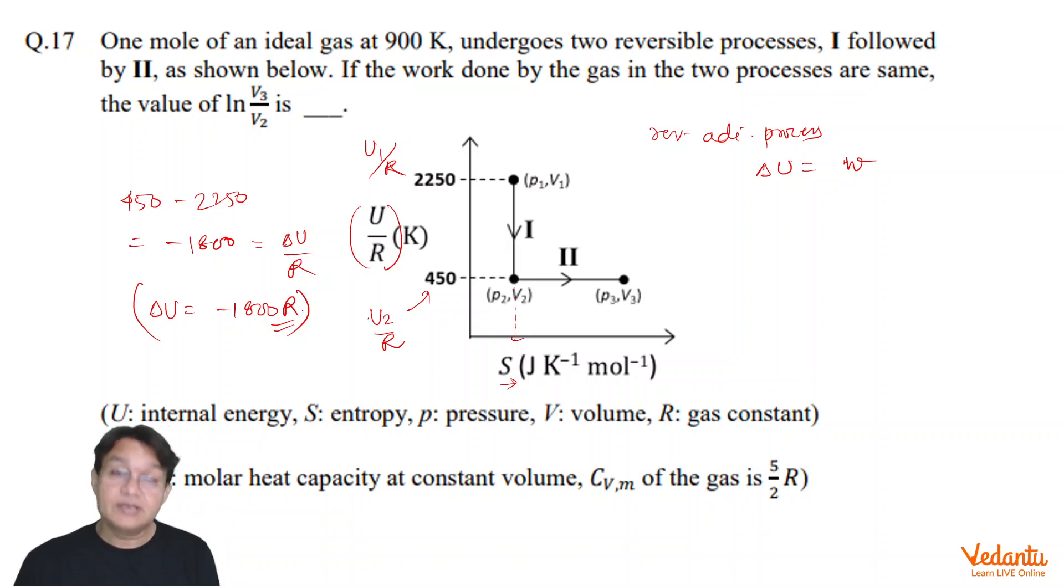The first process, delta U is this. Now delta U must be equal to W. That gives us the value of W must also be equal to minus 1800 R. These are the facts which you have to use. Also, Cv is given as 5 by 2 R. Cv is given in this 5 by 2 R.